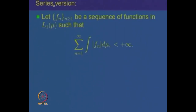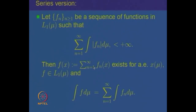Let us prove what I call the series version of this theorem. If F_n is a sequence of integrable functions and the sum of all integrals of |F_n| from 1 to infinity is finite, then the conclusion is that the series F_n(x) converges almost everywhere, and if we denote the sum as F(x), then that function is integrable and the integral of F equals the summation of integrals of F_n's. This is again an interchange of limit essentially.